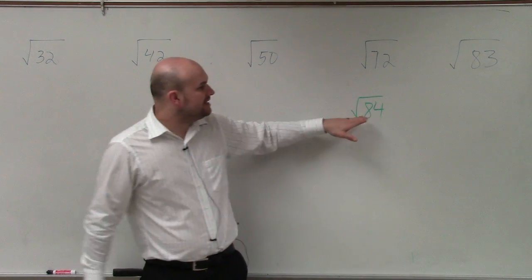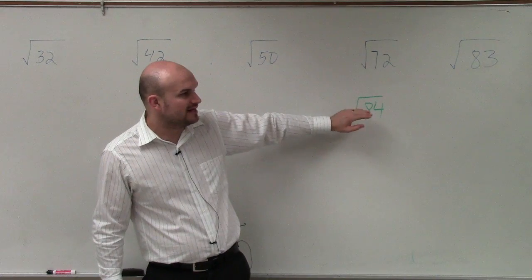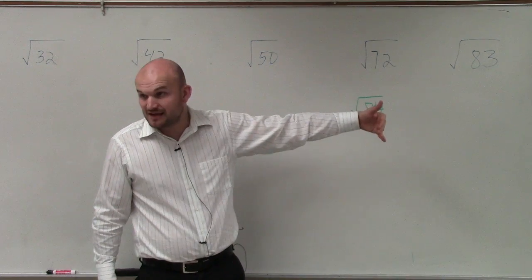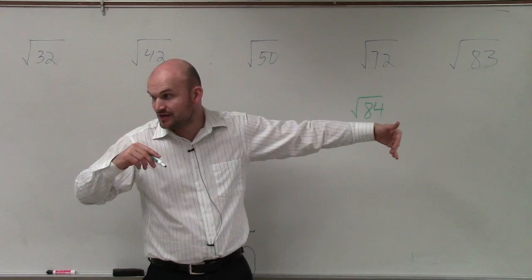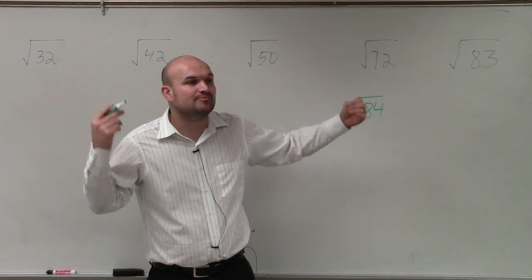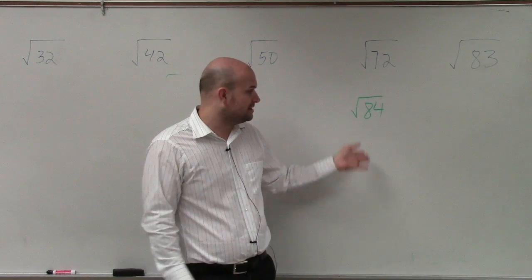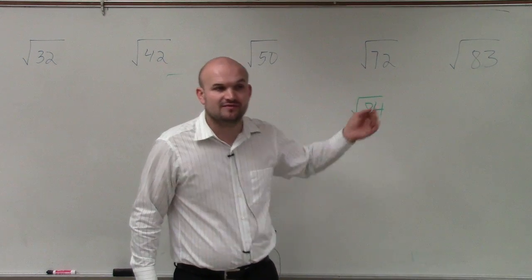The other way that I like to do it is rewriting this. Instead of rewriting it as a product of its prime factors and then taking out the pairs, I like to rewrite it as a product of a square number times some other number to give you 84.